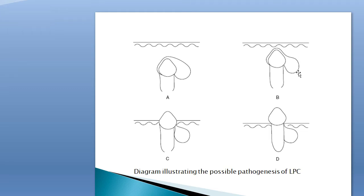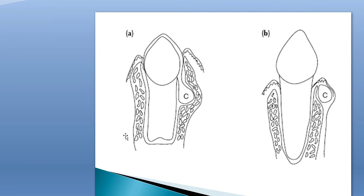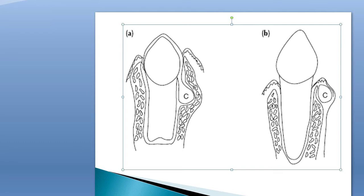When the tooth erupts into the oral cavity, the expanded follicle detaches from the crown and attaches to the lateral root surface of the tooth. In another picture, we can see that the lateral periodontal cyst is formed from the reduced enamel epithelium by dilatation of the follicle before eruption of the tooth, whereas the gingival cyst of the adult shares this common histogenesis.